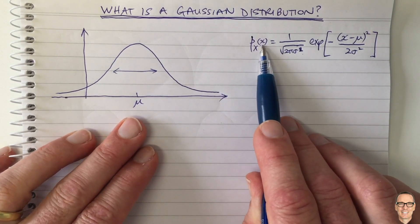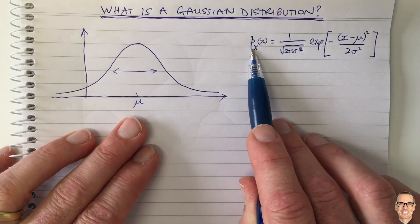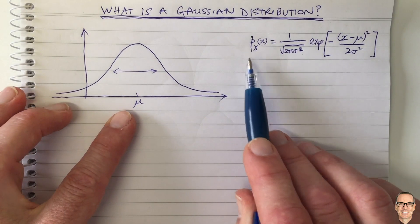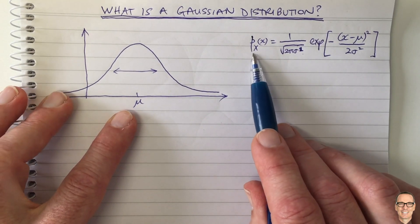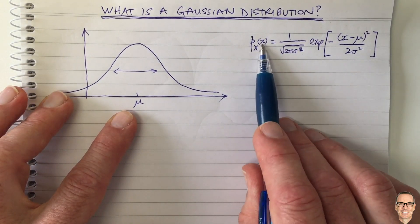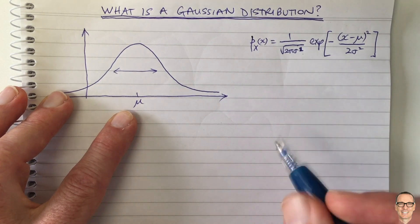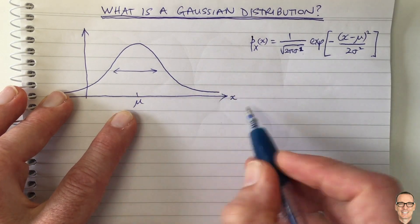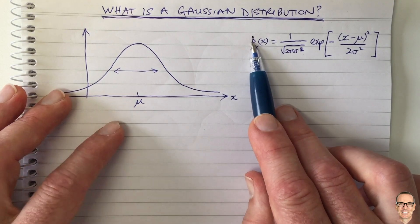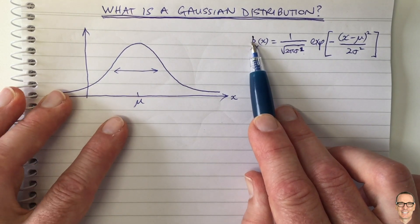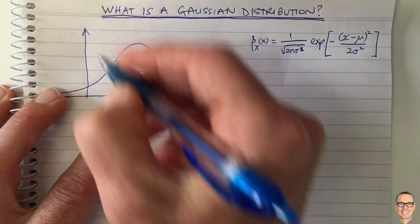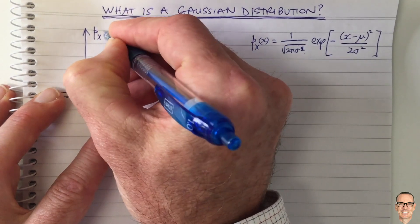And it is a probability density function — so what does that mean? We've got a video on the channel on what is a PDF, so I encourage you to check that out if you're not sure. But this is the value that is plotted — so that's the little x on this axis here — and this is a function, which little p means it's a probability density function, of the random variable capital X. So that's what we're plotting here.